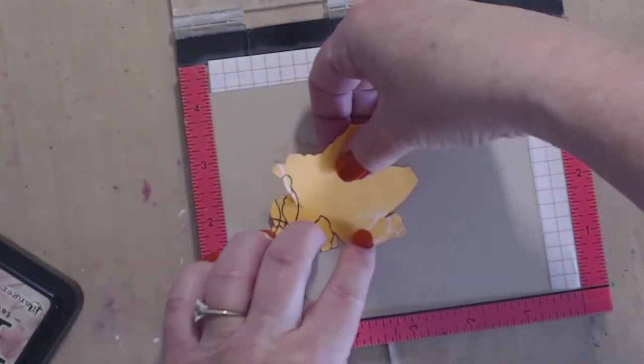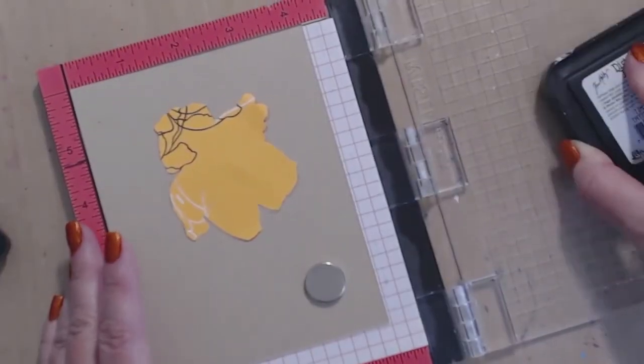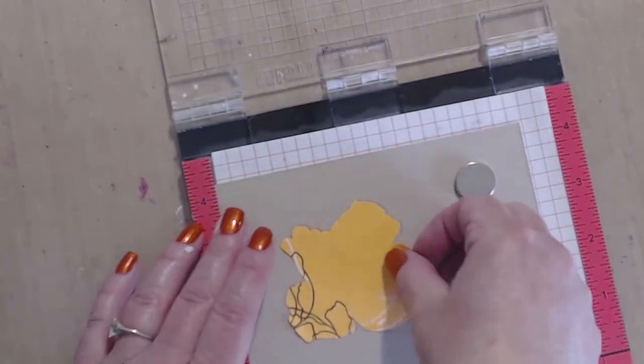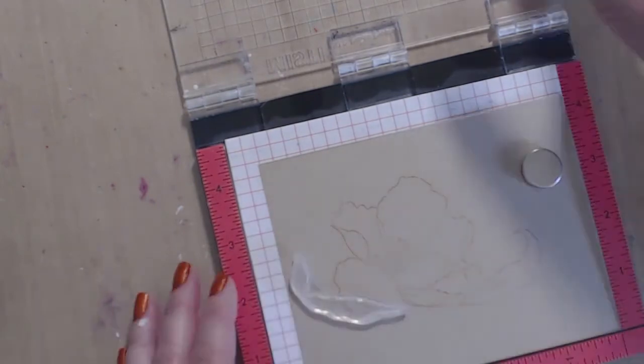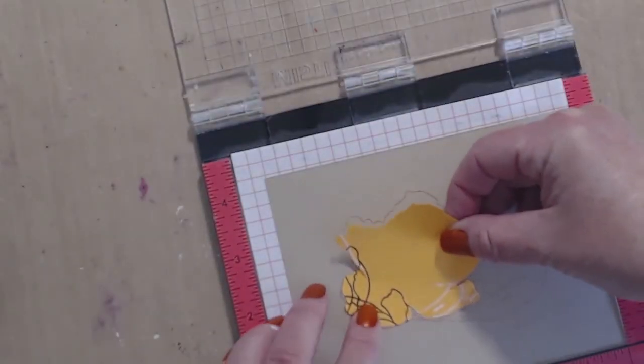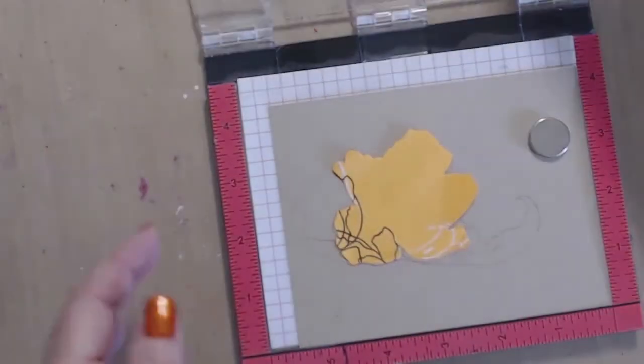For this next card I am stamping onto craft cardstock with tattered rose distress ink. I just want it to be dark enough to let me see where I'm coloring but not so dark that it's going to show with the final product.